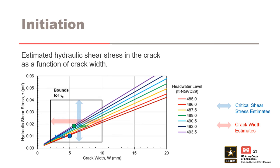For example, the hydraulic shear stress imposed by reservoir elevation 493.5 (the purple line) exceeds the mean critical shear stress and mean crack width (the green dot). The hydraulic shear stress at 492 is about equal, and at 490.5 does not exceed it. Therefore, based on mean values, initiation of erosion is not predicted at reservoir elevation 490.5, but is predicted at 493.5. For the best estimate or mode parameters (blue dot), initiation of erosion is predicted for all reservoir levels above elevation 485 because the hydraulic shear stress exceeds the best estimate of critical shear stress and crack width, which is consistent with the observed performance in 1949.